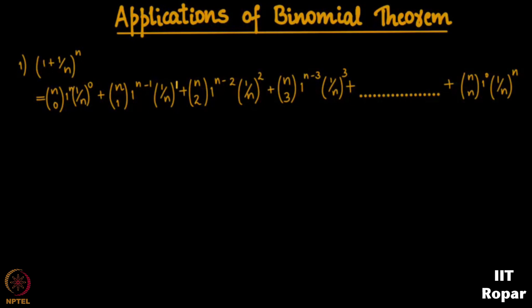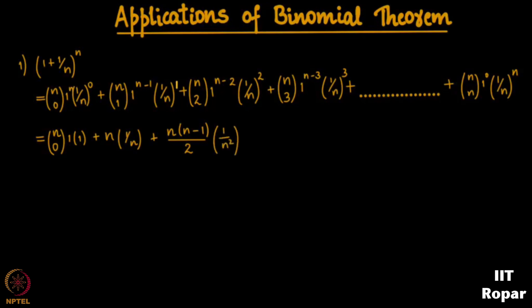When I expand this, n choose 0 is 1, and 1^n is 1. Then n choose 1 equals n, times 1 by n. Next, n choose 2 can be written as n(n−1)/2, times 1/n². And n choose 3 is n! / (3! · (n−3)!), times 1/n³, and so on.